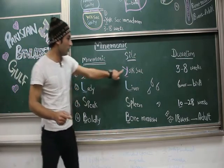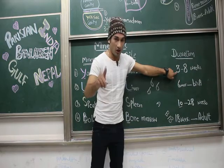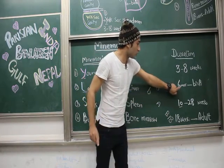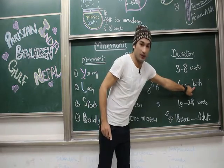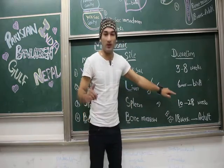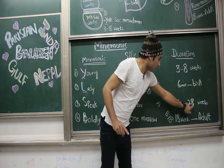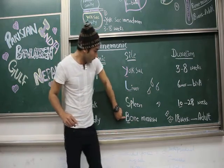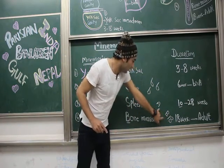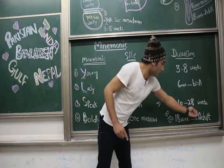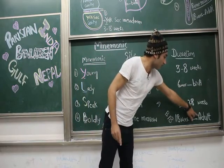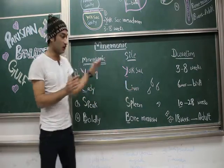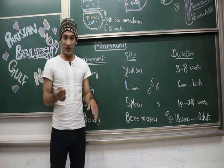So to recap — Young Lady Speak Boldly: Y for Yolk sac, three to eight weeks (embryonic period); L for Liver, six weeks to birth (L looks like six, six looks like B); S for Spleen, ten to twenty-eight weeks (S sounds like ten in Chinese, and two plus eight is ten); B for Bone marrow, eighteen weeks to adulthood. Just remember this mnemonic and you can solve many MCQs on fetal erythropoiesis. Hope you enjoyed it — bye!